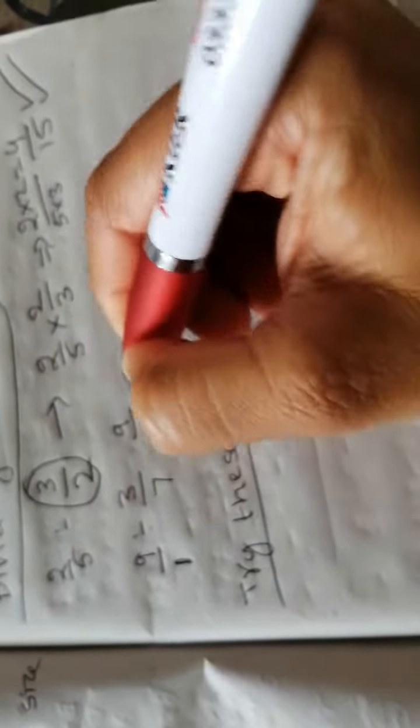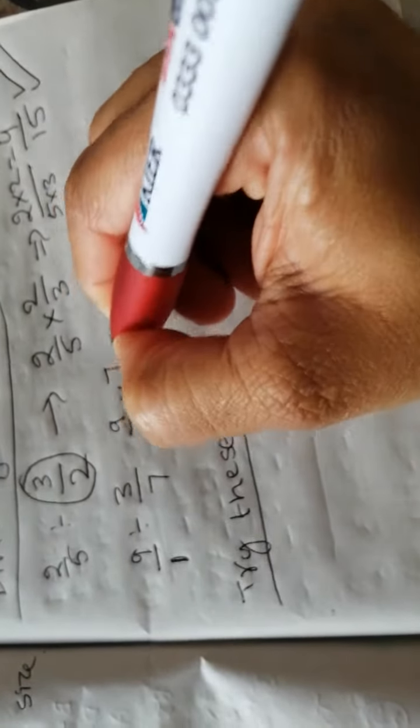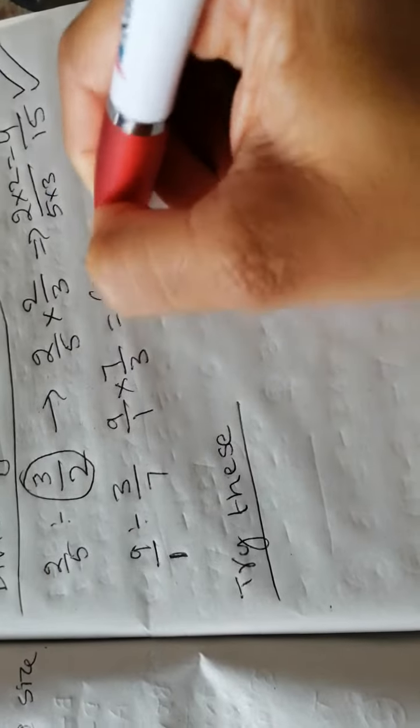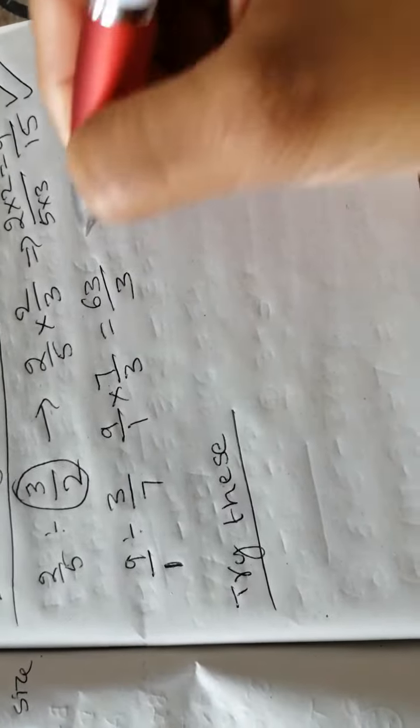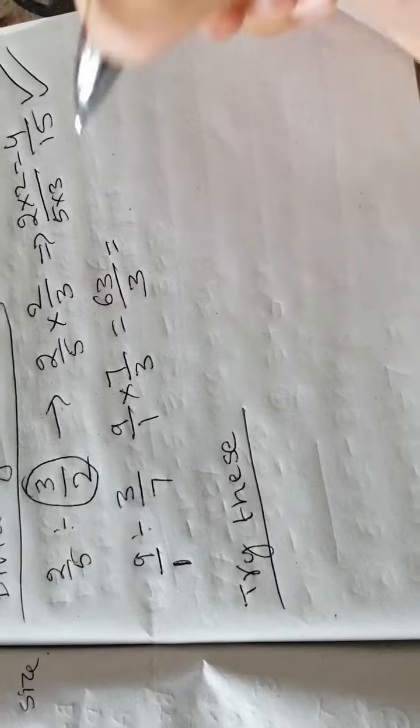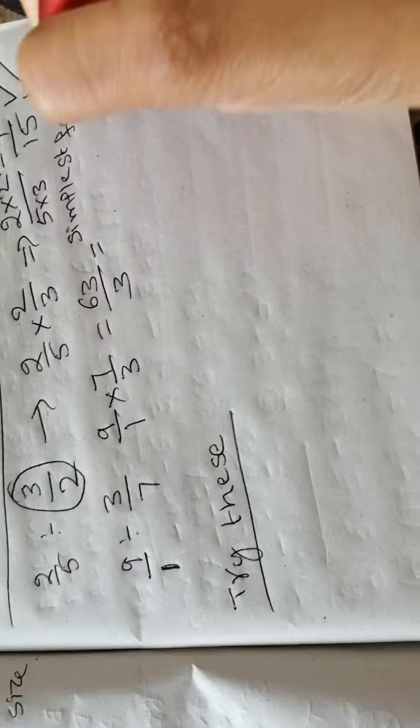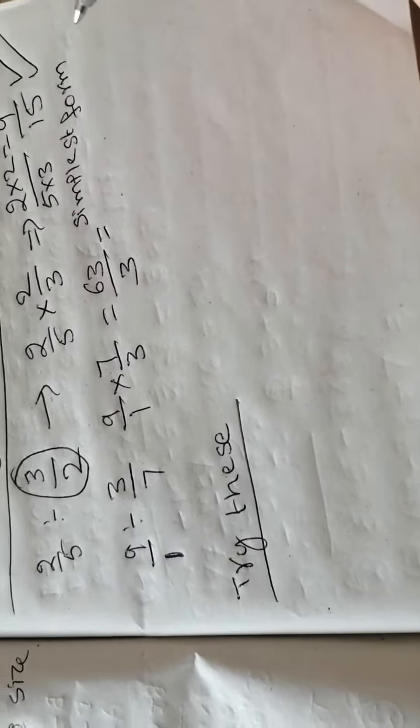So 9 over 1, flip over 63 over 3. And if you're asked to give your answer in simplest form,